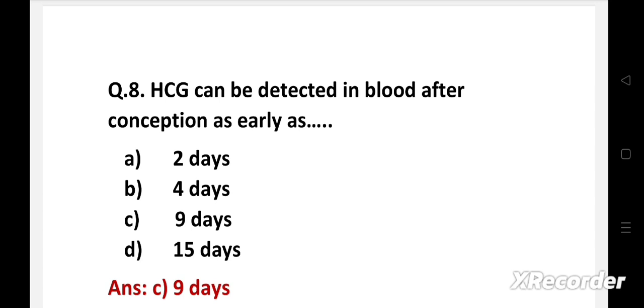Human chorionic gonadotropin (HCG) can be detected in blood after conception as early as nine days. Blood tests are slightly more sensitive than urine tests because they can detect very small levels of HCG.